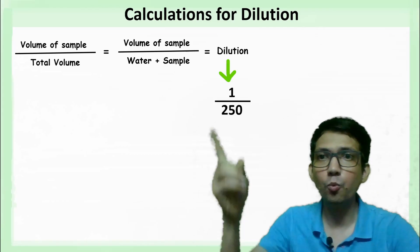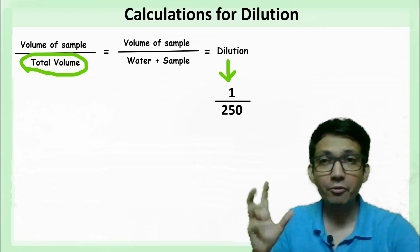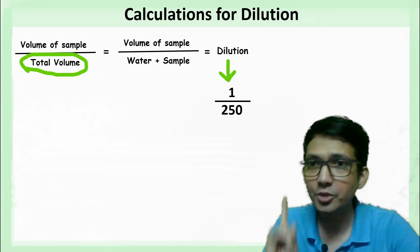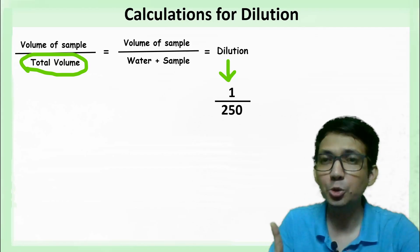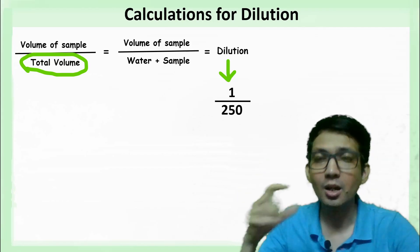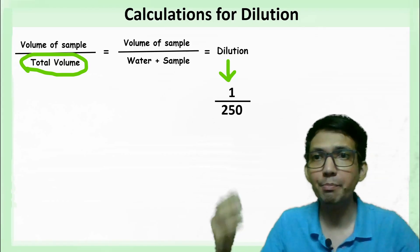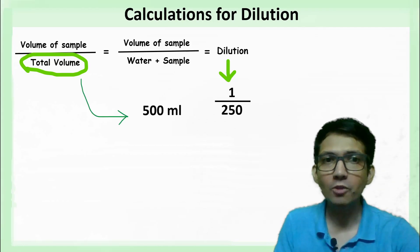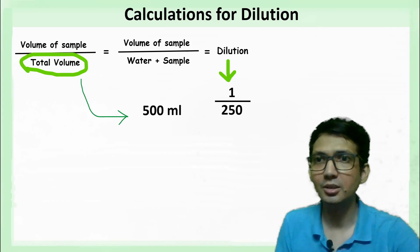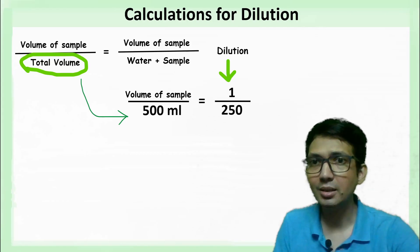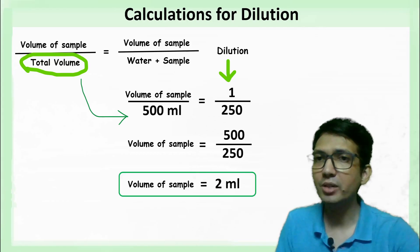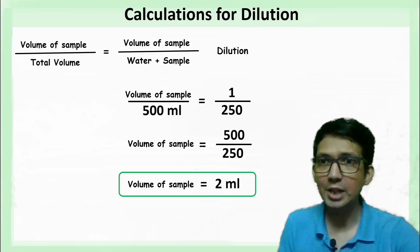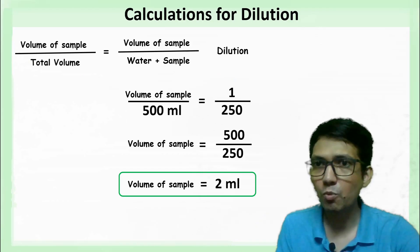Let's look at one more example. Say you want to achieve a dilution of 1/250. You first decide the total volume — whether to carry it out in a test tube, flask, beaker, or big vessel. Let's say the total volume required is 500 milliliters. The volume of sample required will be 500 divided by 250, which is 2 milliliters.